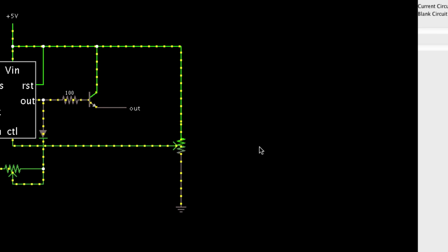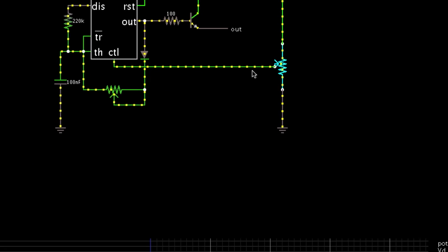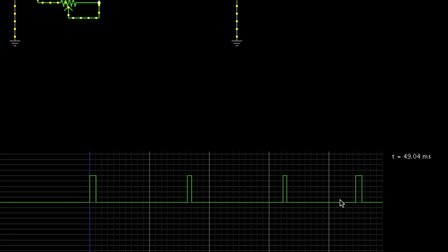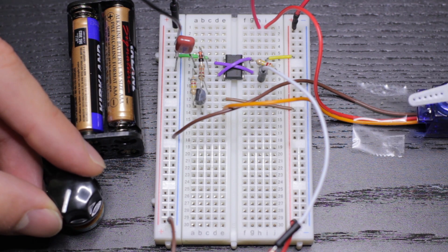When we lower the resistance to the control pin from the 5 volt supply rail, we increase the voltage seen at pin 5, which increases the pulse length. And here it is in action.